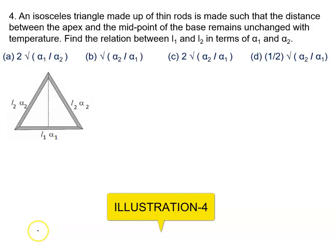An isosceles triangle made of thin rods is made such that distance between the apex and the midpoint of the base remains unchanged with temperature. This means size is increasing, but the length from the apex to the center is always constant. Find the relation between L1 and L2 in terms of alpha 1 and alpha 2.